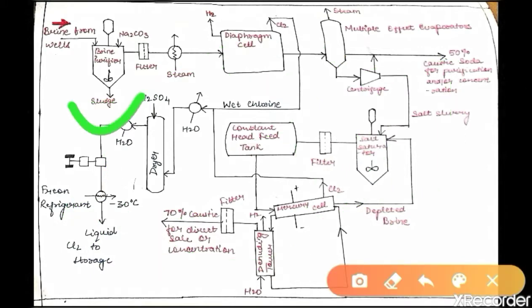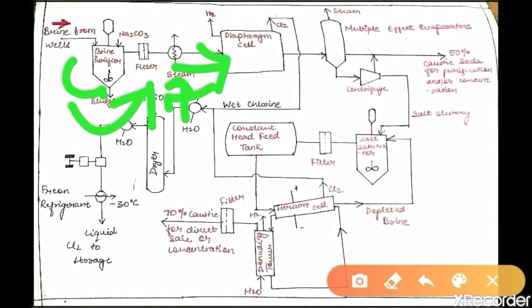After brine purification, the solution is sent through a filter to remove any remaining impurities that may have been left behind. It is then passed through a steam heat exchanger to raise the temperature of the brine solution before it enters the diaphragm cell.